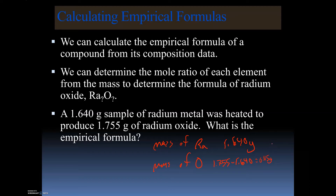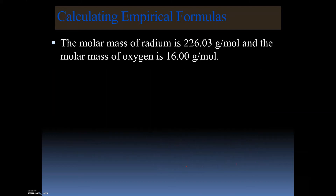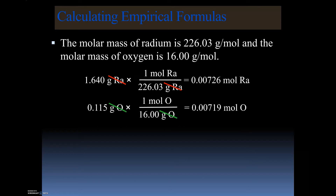Now we have both grams of radium and grams of oxygen. The next step is to convert grams to moles, because the empirical formula is the simplest whole number mole ratio. We take the molar mass of radium, 226.03, and divide: 1.640 ÷ 226.03 = 0.00726 moles of radium. For oxygen: 0.115 ÷ 16 = 0.00719 moles.